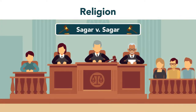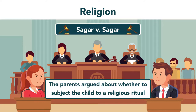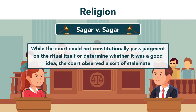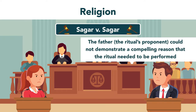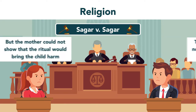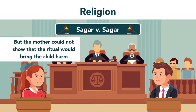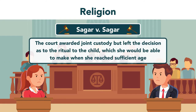In Sagar v. Sagar, the parents argued about whether to subject the child to a religious ritual. The court could not constitutionally pass judgment on the ritual itself. Observing a stalemate—the father could not demonstrate a compelling reason the ritual needed to be performed, and the mother could not show it would bring the child harm—the court awarded joint custody but left the decision regarding the ritual to the child when she reached sufficient age.